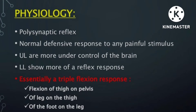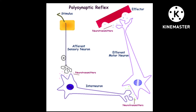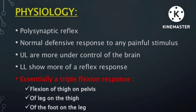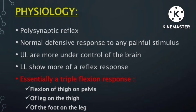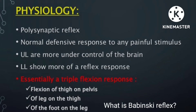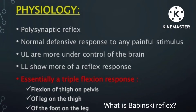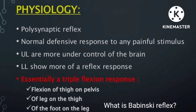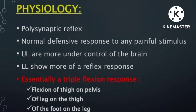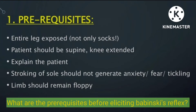Babinski reflex is essentially a polysynaptic reflex which indicates a normal defensive response to any painful stimulus. It is seen in the lower limb because lower limbs show more reflex responses, while upper limbs are more under control of the brain. It is essentially a triple flexion response to a noxious stimulus — flexion of the foot on the leg, flexion of the leg on the thigh, and flexion of the thigh over the pelvis.